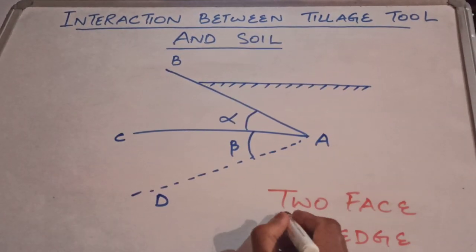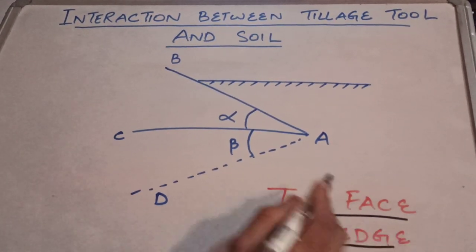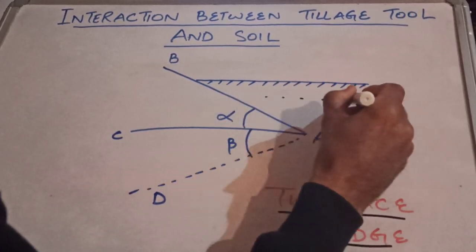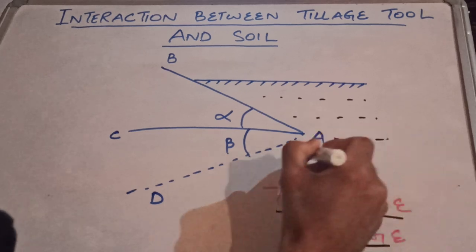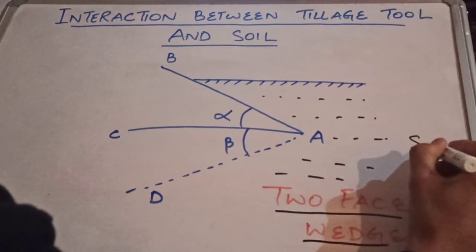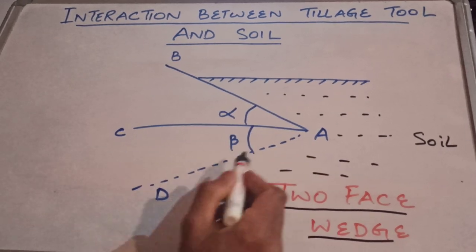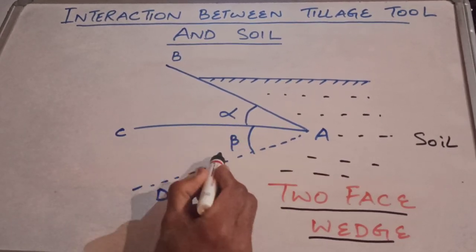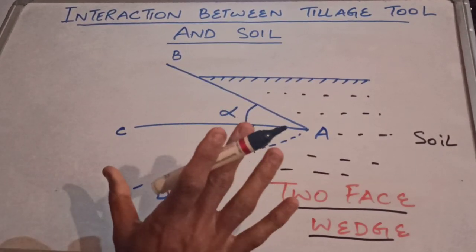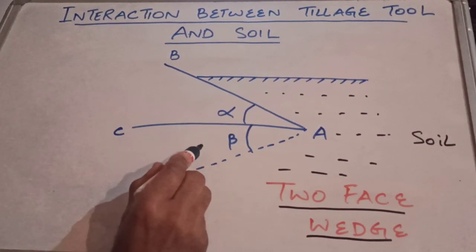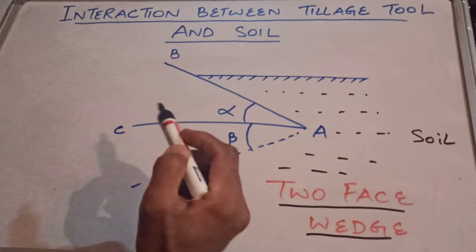This is the two phase wedge. AB and AD are the two phases. These two phases, AB and AD, come in contact with the soil. If you analyze it, you will see that two phase wedge is nothing but the combination of two single phase wedges.